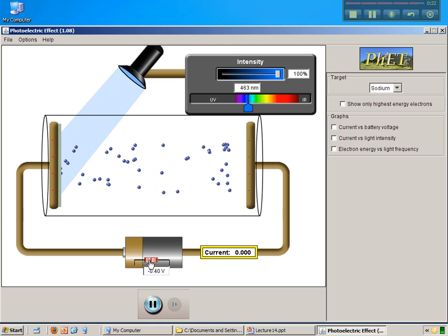And I can find the value of the stopping potential such that none of the electrons, so the electrons just, the maximum kinetic energy electrons are just repelled from the second electrode. So this is a really nice simulation that you can play with.